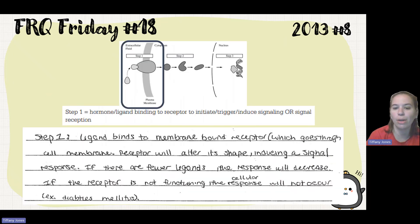So the student says ligand binds the membrane bound receptor which goes through all cell membrane. Receptor will alter its shape inducing a signal response. If there are fewer ligands, the response will decrease. If the receptor is not functioning, the cellular response will not occur. Example, diabetes.